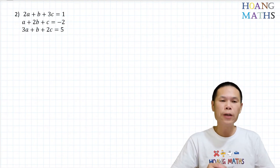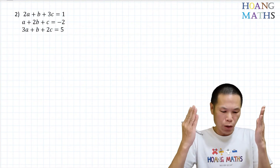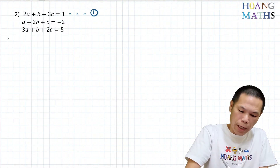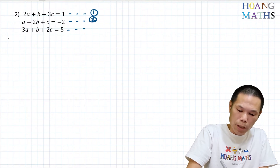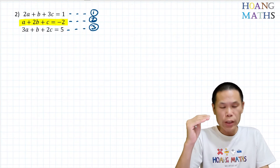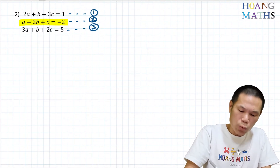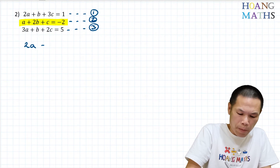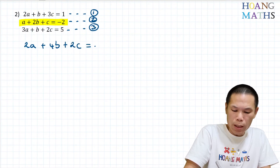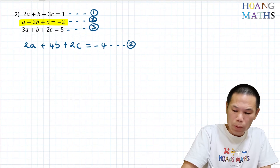Let's get into it. The first step is to get rid of either variable a, b, or c — it doesn't matter which one. I'll get rid of variable a first. I'll name the equations: equation one, equation two, and equation three. If I multiply equation two by two, I get 2a, and then equation one minus that new equation will eliminate a. So equation two times two gives: 2a plus 4b plus 2c equals negative four.